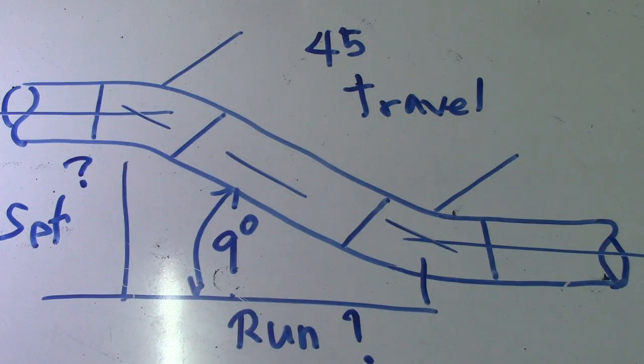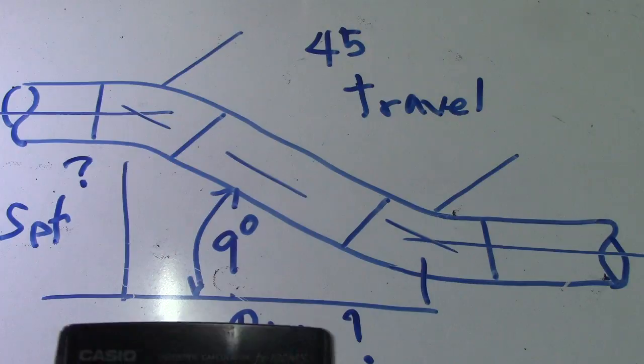First we will compute the set. To find the set, the formula is: set equals travel multiplied by sine.